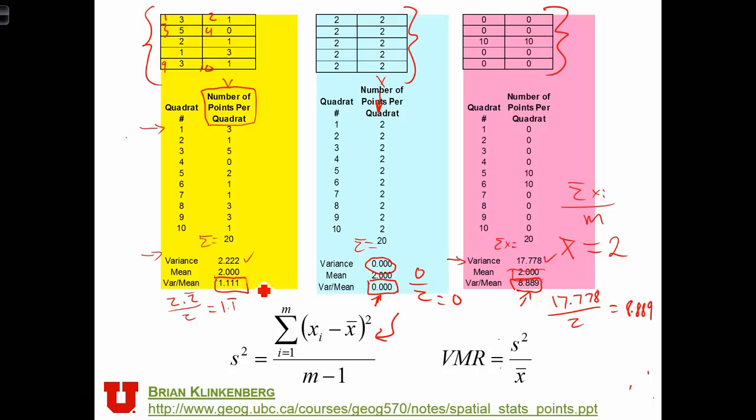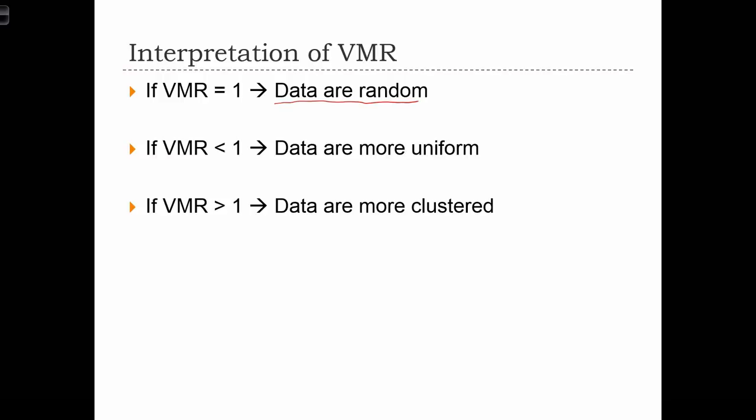So we've got a VMR. So if VMR is equal to 1, that's going to imply that the point pattern was a random spatial pattern. If VMR is less than 1, if it gets close to 0, then the data are more likely to be uniform. And if the VMR is greater than 1, if there's a lot of variation in the number of points per quadrat, then we're going to assume that that means that the data are more clustered.